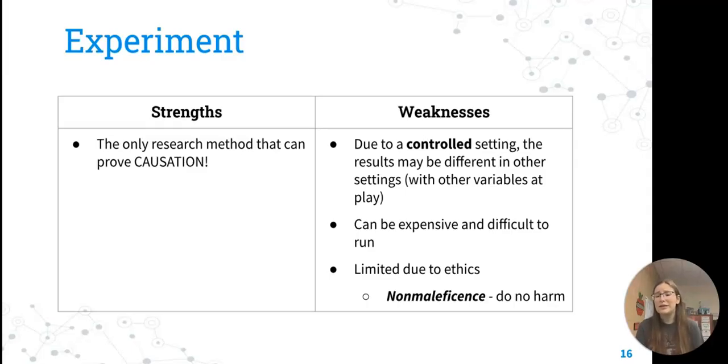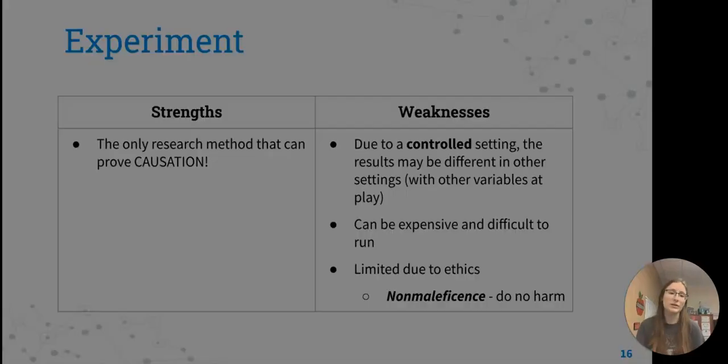These can be very expensive and difficult to run when you're trying to control a whole environment and eliminate all other variables. It can add up. If research is not fully funded, it can be less achievable to conduct experiments. There are some limits due to ethics. We cannot harm our participants and we do need to let them know that they are parts of studies. So there are some things that are going to be a little bit harder to do experiments on. We don't want to do any harm to participants.